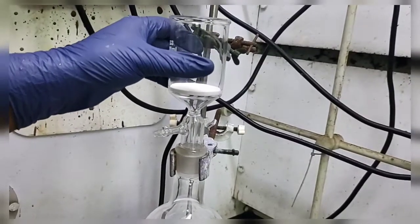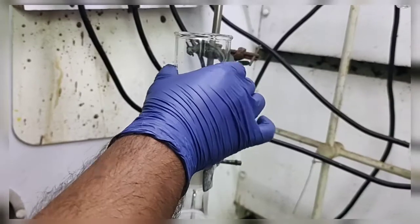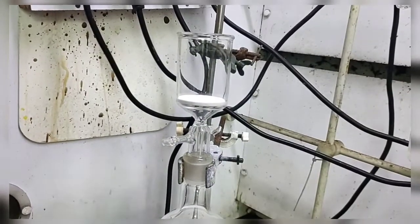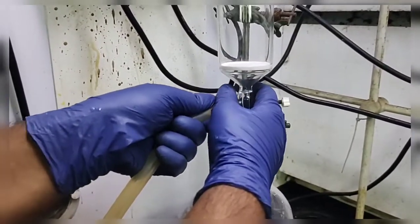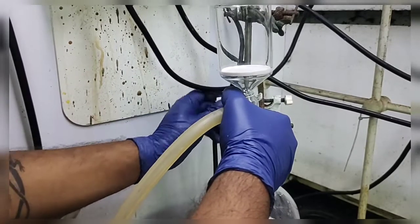Now we will fix this sintered funnel in this round bottom flask and to it we will attach a vacuum pressure pump.